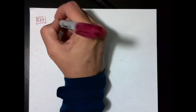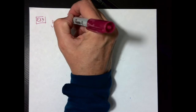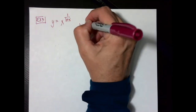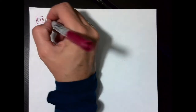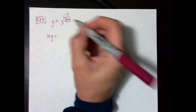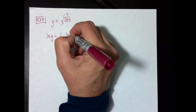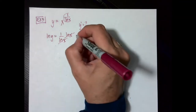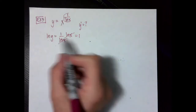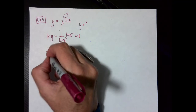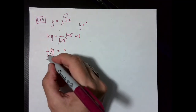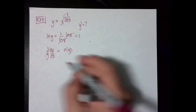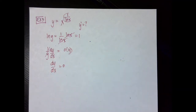In example number three, we're going to have y equals x raised to the 1 over the natural log of x. I want to know the derivative. Again, I take the natural log of both sides: natural log of y equals 1 over natural log of x times natural log of x. Notice right here that the natural log and the natural log cancel — so I get that this equals 1. Now when I take the derivative, the derivative of 1 over y times dy/dx is equal to zero. If I multiply both sides by y, zero times y is zero — so dy/dx equals zero. That was kind of cool.